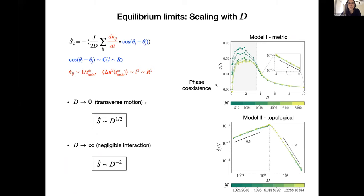And I will not go through the details of this, but with a simple approximation, we could predict the scaling, the power law scaling in these two regimes, as D to the one half when D goes to zero and as D to the minus two when D goes to infinity. And this is in good agreement with the numerical simulations, especially in the topological case. In the metric case, this agreement is still good in the high temperature phase, but the prediction is failing in the low temperature phase where we have phase coexistence.